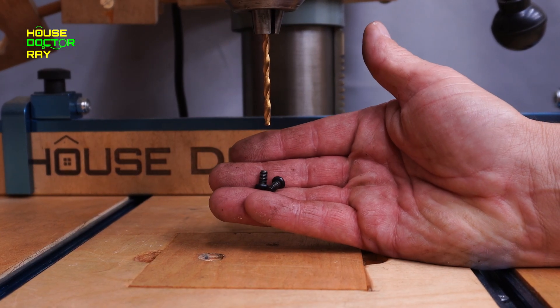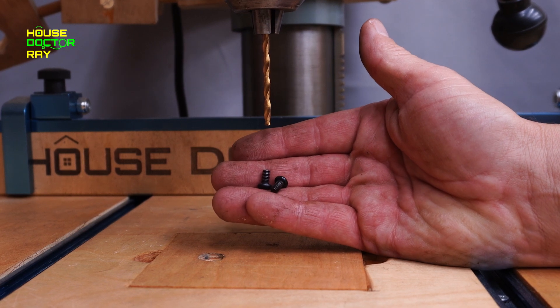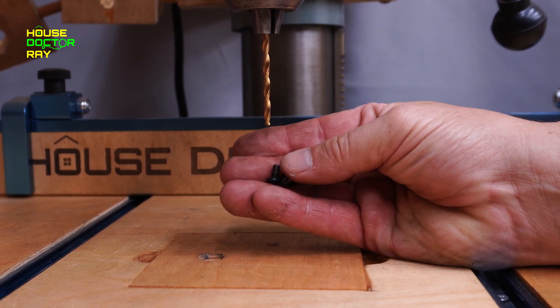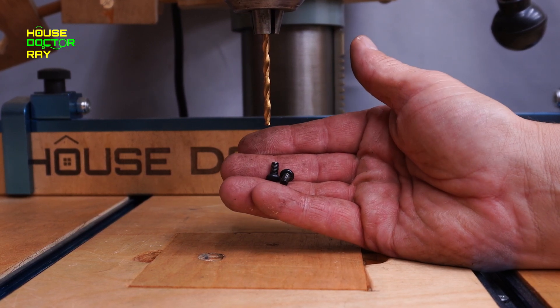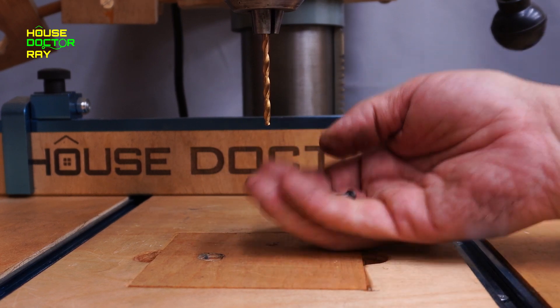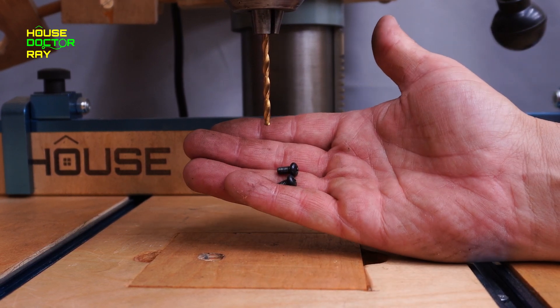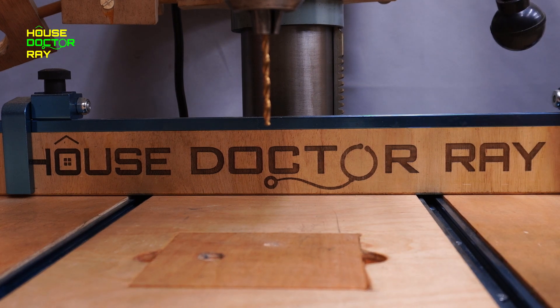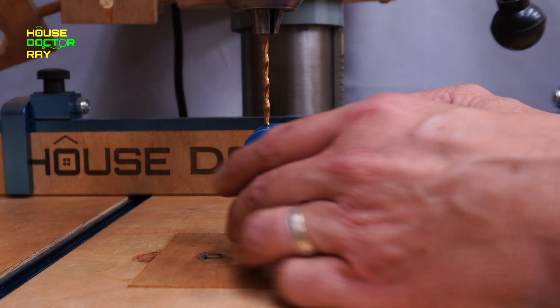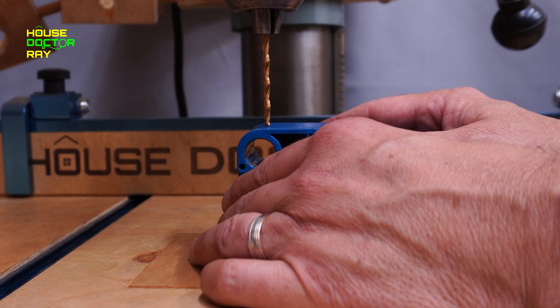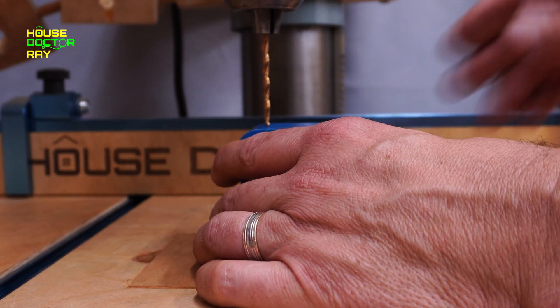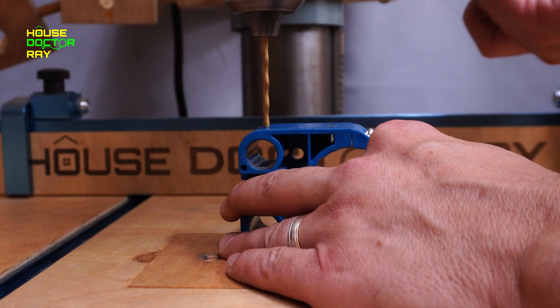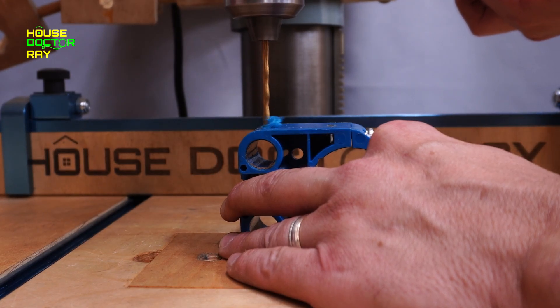I'm going to be using these 8-32 screws. They're 5/16 long. That should give me the clearance I need on the deflector shields. And the reason why I picked these screws is because that's what I found in the wish box. I'm not exactly sure if this is the right size bit. It's 9/64. Looks like it's close enough. And I'll just drill the holes and then tap it.